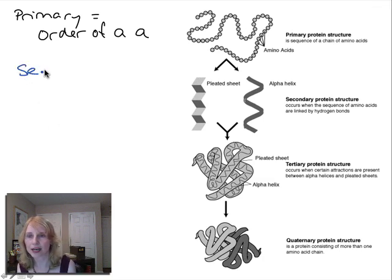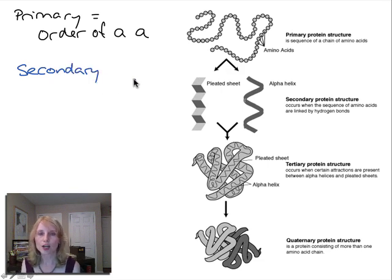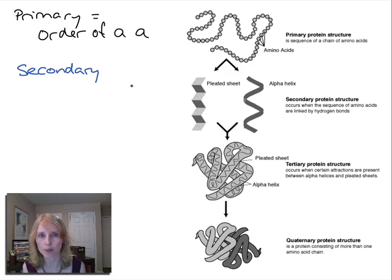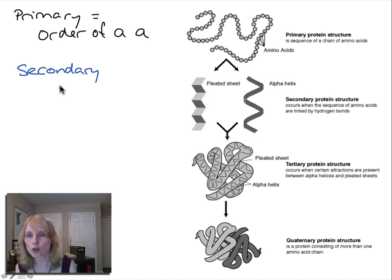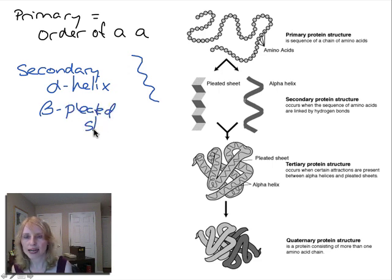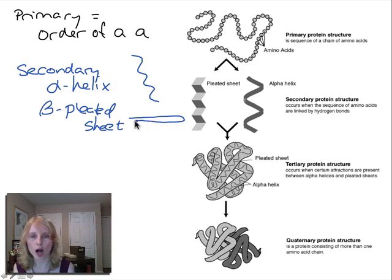Then we have the secondary protein structure, which is the particular shape that just a segment of the polypeptide chain takes on — not the three-dimensional shape of the entire polypeptide, just a segment of it. There are two types: one is the alpha helix, which is when a segment of the chain forms a helical structure. The other is the beta pleated sheet, which is when the chain of amino acids folds over on itself to become a folded sheet.